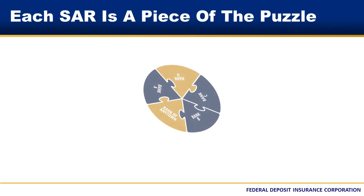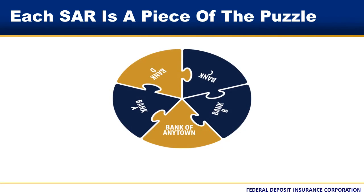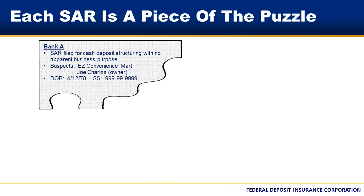We are going to walk through an example based on an actual case, although the names and other identifying facts in the case have been changed. Law enforcement suspected that a company, which we will call Bad Drug Company, was involved in a drug trafficking operation. As part of their investigation, they were tracking a suspect known to be using multiple aliases. It took numerous SARs filed by several banks for law enforcement to put the puzzle together. Bank A filed a SAR on EZ Convenience Mart for suspected structuring due to multiple cash deposits just under $10,000 made on the same day that appeared to be designed to evade reporting requirements. Additionally, the deposits did not appear to have a lawful business purpose based on the bank's CDD of the business. Joe Charles was listed as the suspect and was the registered owner of EZ Convenience Mart.